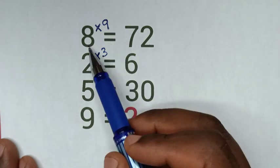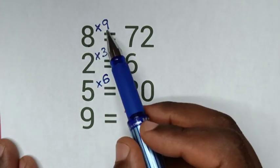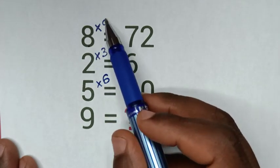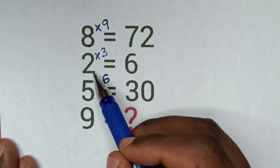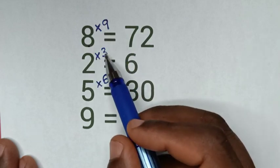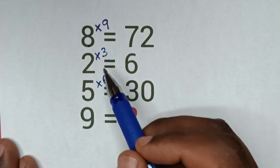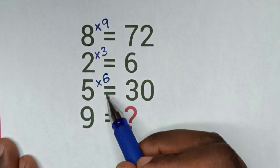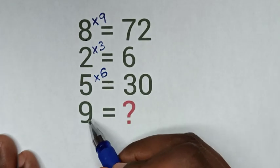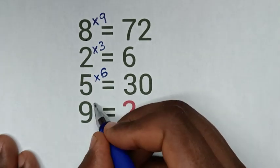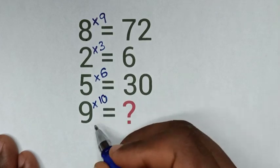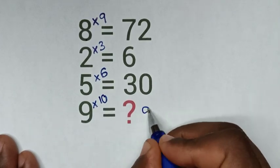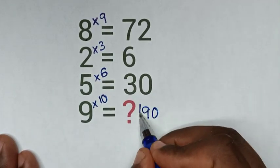From here you can see: 8 plus 1 is 9, so 8 times 9. And 2 plus 1 is 3, so 2 times 3. And 5 plus 1 is 6, so 5 times 6. And here it will be 9 plus 1 is 10, so it will be 9 times 10. Since 9 times 10 is 90, therefore this is the correct answer.